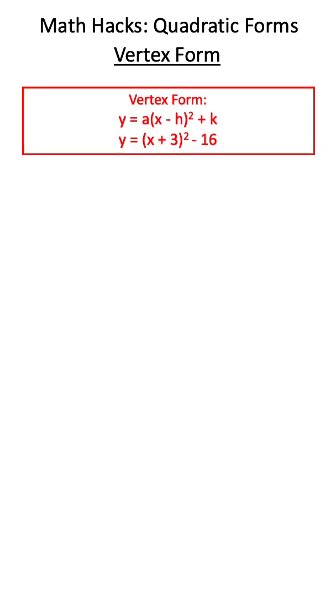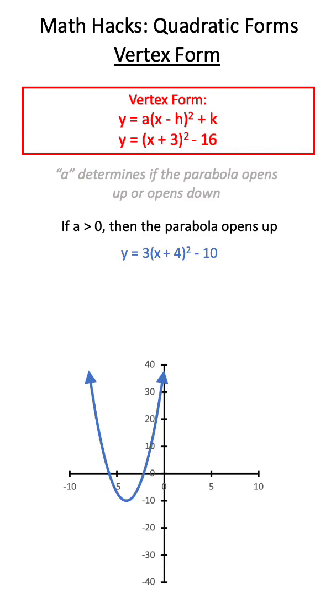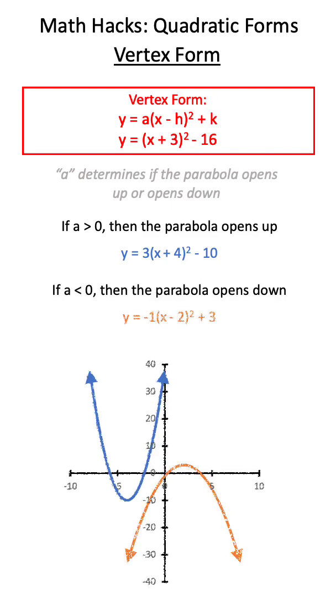What information can we get from vertex form? a in vertex form will determine if a parabola opens up or opens down. If a is positive, such as an equation like this, a parabola will open up. If a is negative, such as an equation like this, our parabola will open down.